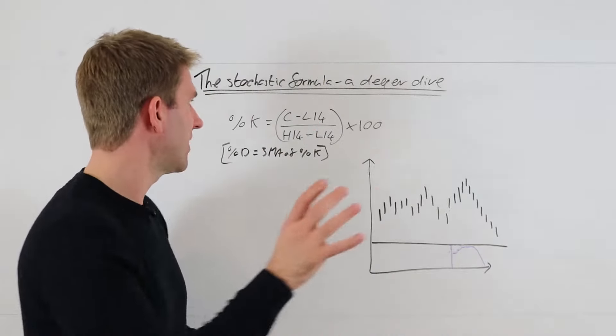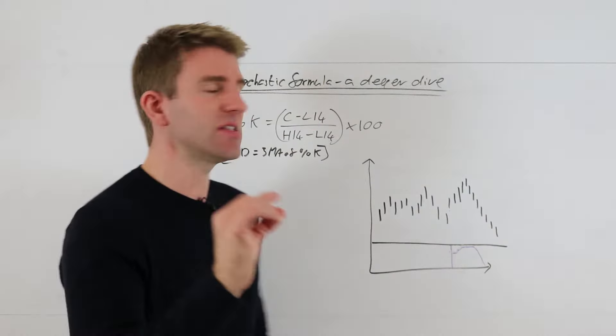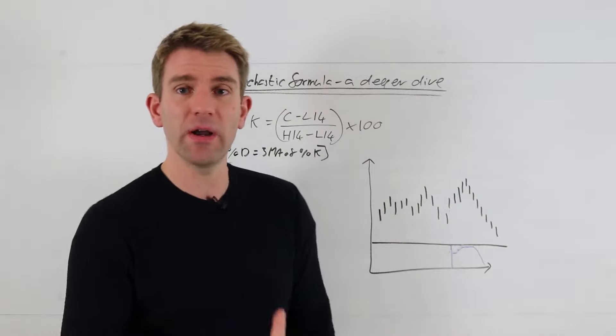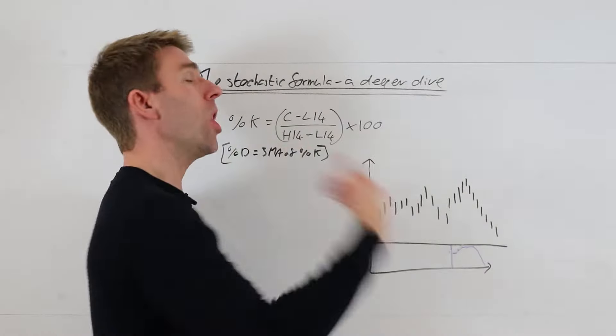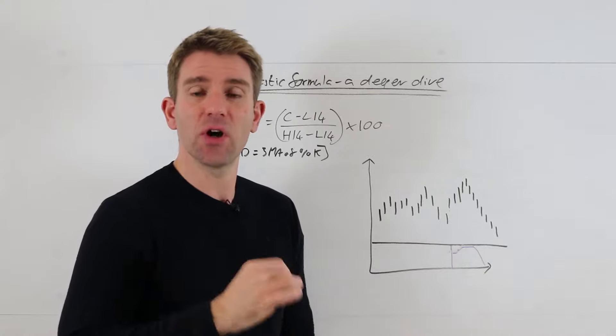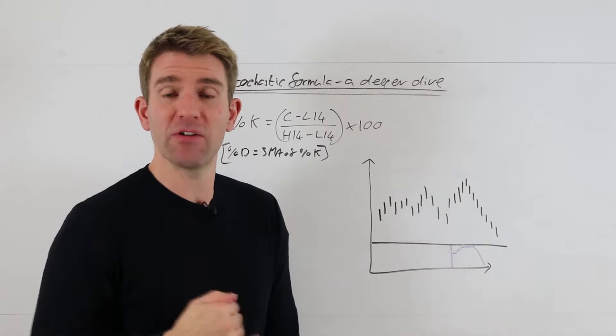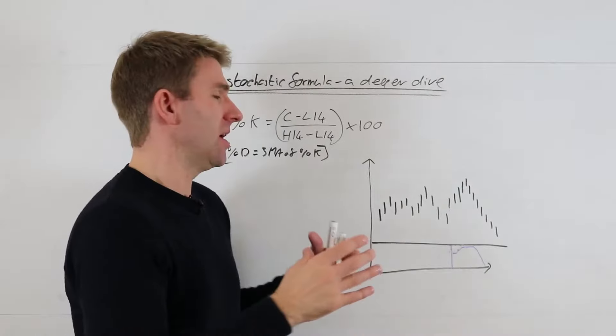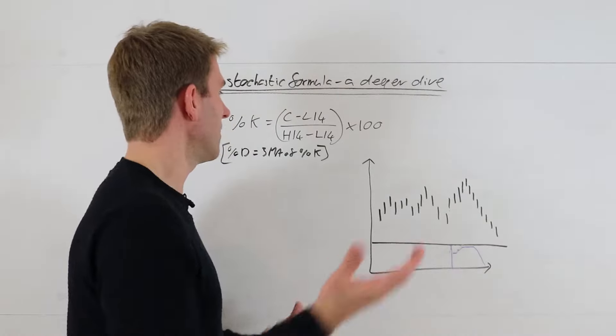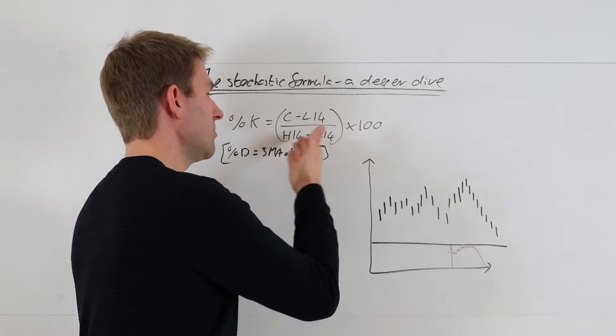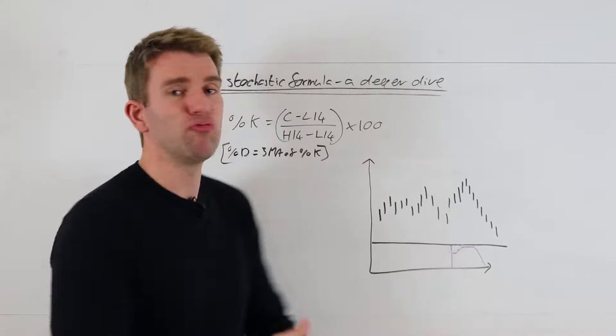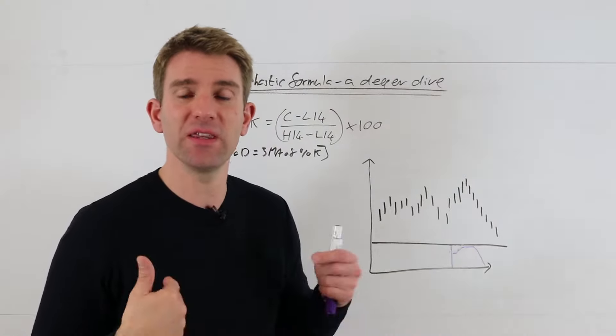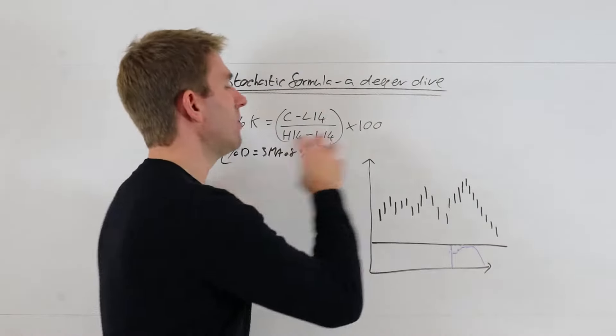Percentage K is this: it's the close or the current price minus the low 14 days ago, so the lowest period we have over 14 days. And then on the bottom here we've got the high minus the low, so the range over the past 14 days.